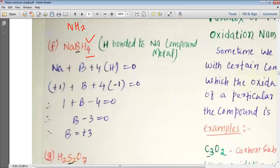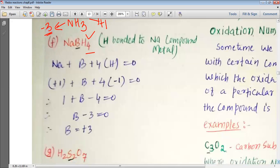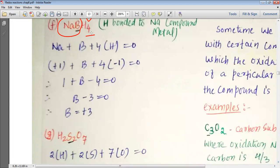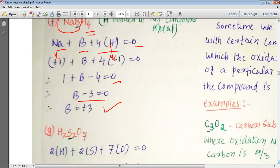There is an exception: in ammonia (NH₃), hydrogen has +1 oxidation state while nitrogen has −3 oxidation state, even though hydrogen is written after nitrogen. This is because nitrogen is more electronegative than hydrogen. In NaBH₄, both sodium and boron are less electronegative than hydrogen, so hydrogen gets the negative charge. Writing Na + B + 4H = 0: +1 + B + 4(−1) = 0, giving 1 + B − 4 = 0, so B − 3 = 0, and the oxidation state of boron is +3.